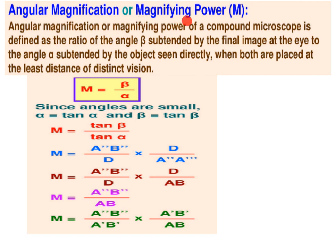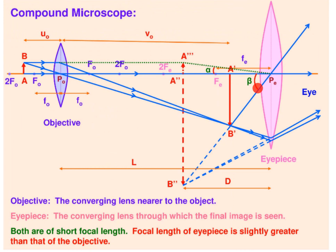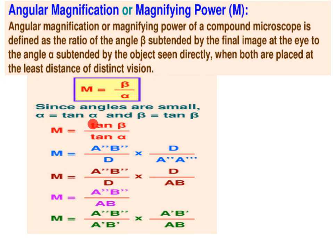Angular magnification or magnifying power of a compound microscope is defined as the ratio of the angle beta subtended by the final image at the eye to the angle alpha subtended by the object seen directly, when both are placed at the least distance of distinct vision. So we get M is equal to beta upon alpha. Since both angles are very small, alpha equals tan alpha and beta equals tan beta, therefore M is equal to tan beta upon tan alpha.